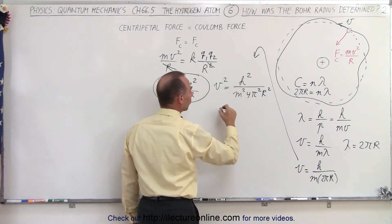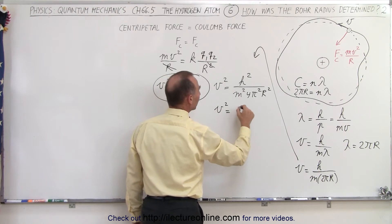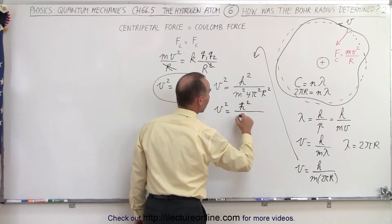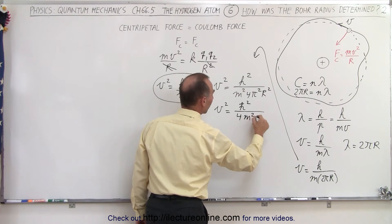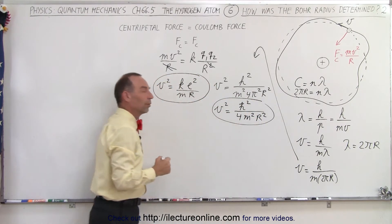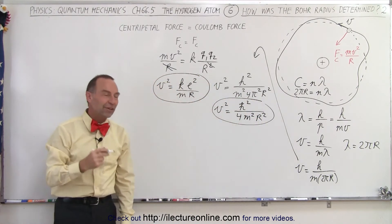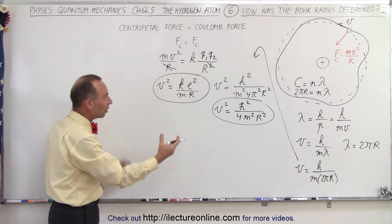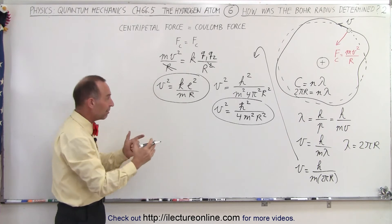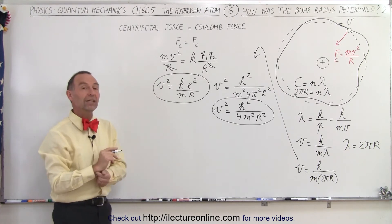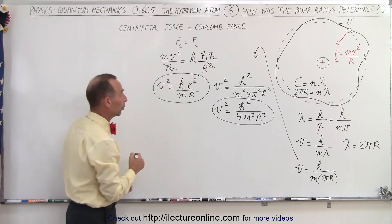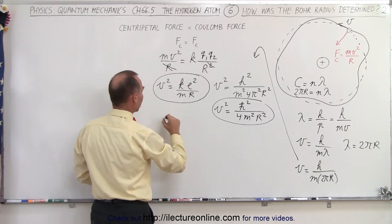We also have v² equal to h² divided by m² times 4π² times r². Sometimes h over 2π is written as h-bar, so this can also be written as v² equals h-bar² divided by 4m²r². Now we have two equations for v² in terms of r, and we can set them equal to each other to eliminate v, leaving only r — the radius of the orbit — as the unknown.